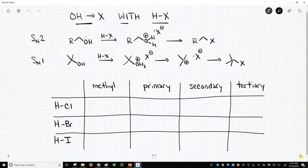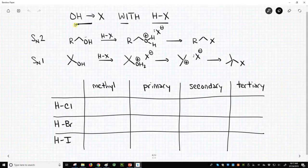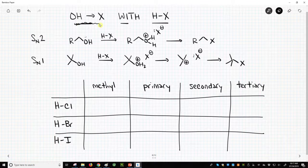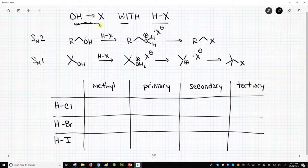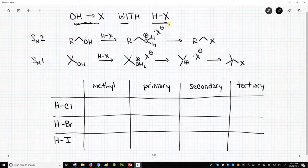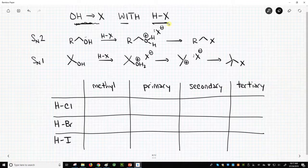As we've mentioned in the past, it's important to be able to convert an alcohol into a leaving group. In this case, our leaving group is going to be a halide. So we're just going to convert OH into X, and we're going to use reagents like HX. There are two ways this can happen. It's a substitution reaction, so it can go through an SN1 or an SN2.